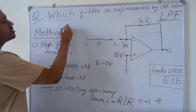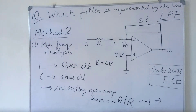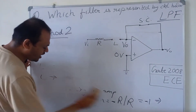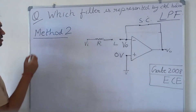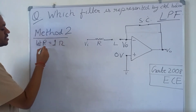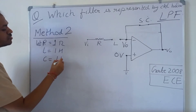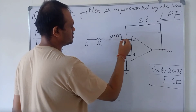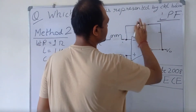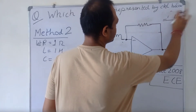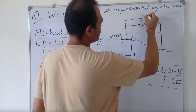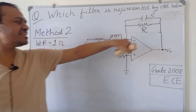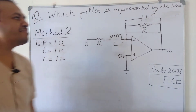Now we will do Method 2. In Method 2, we will assume that all the component values are 1. So let R equal to 1 ohm, L equal to 1 henry, and C equal to 1 farad. We are assuming this resistance and this resistance is 1 ohm, this inductance is 1 henry, and this capacitance is 1 farad.